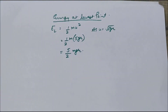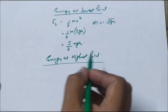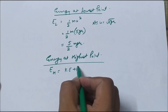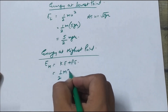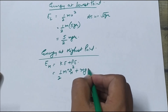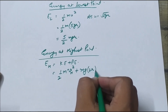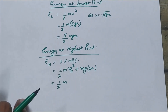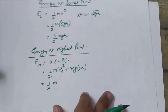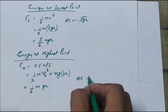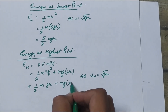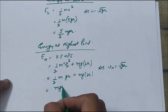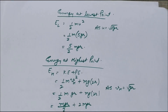Similarly, energy at the highest point includes both kinetic energy and potential energy. It equals half m v_H² plus mg times h, where h equals 2r and v_H equals root gr so v_H² equals gr. This gives half m times gr plus mg times 2r, which equals mgr/2 plus 2mgr, coming out to be 5mgr/2. This confirms conservation of energy — total energy at the highest point also equals 5/2 mgr.